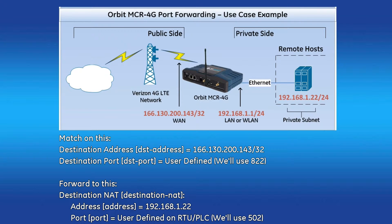To create the port forward rule, two sets of criteria are needed. The first is the match criteria, or what the Orbit will filter for to determine if an incoming data packet should be forwarded. It will check for correct IP addresses, ports, and protocol.